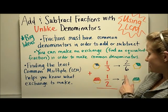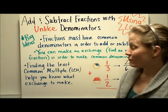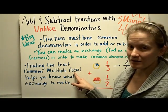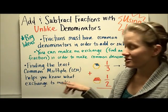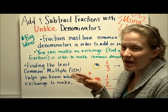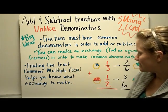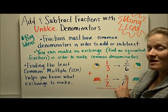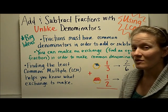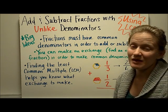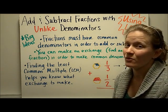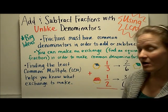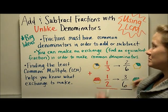And now they're ready to add because the denominators match. Third, finding the least common multiple, or LCM, helps you know what exchange to make. We can figure it out with pieces, but sometimes we don't have pieces in front of us, or we have fractions we don't have a model for. So using the least common multiple will help you know what denominator you need to use.